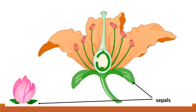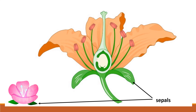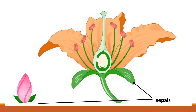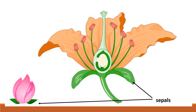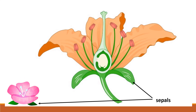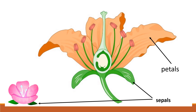Sepals are the green leaf-like structures at the base of the flower. Sepals protect the flower during its development and support the petals when the flower blooms. Petals are colorful structures that surround the inner parts of the flower.